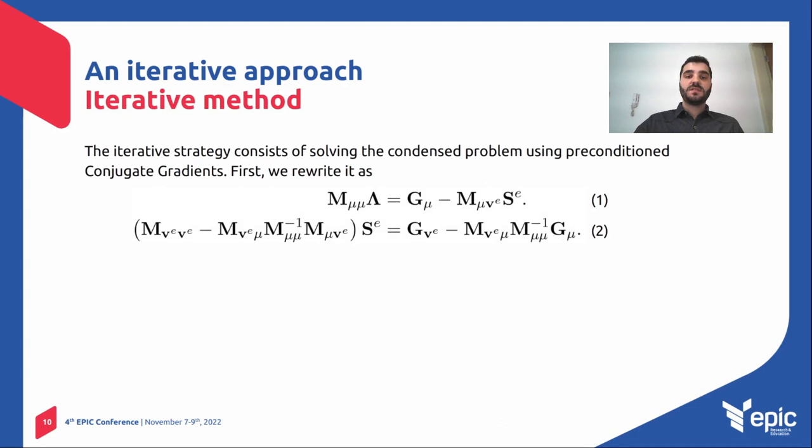So our iterative scheme consists of separating the two equations I presented you before in the matrix form problem. And then what we do is to solve the second one iteratively by means of a conjugate gradient, and then substitute the solution onto the first one.